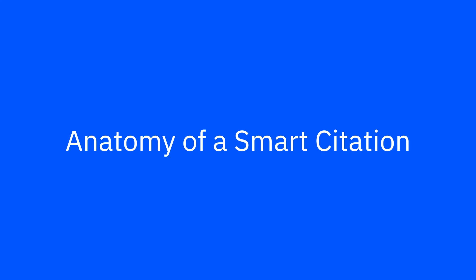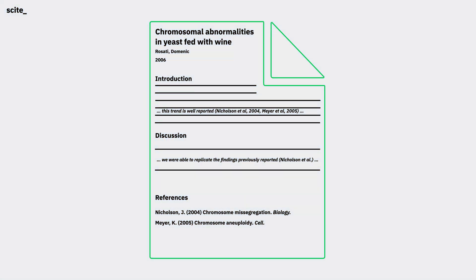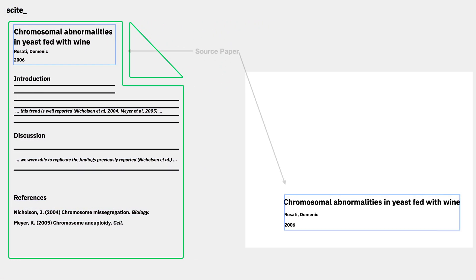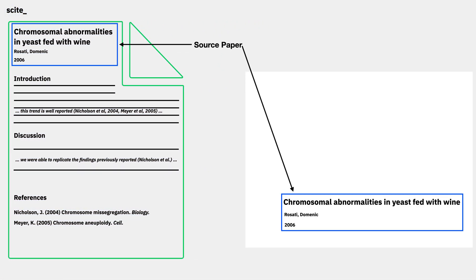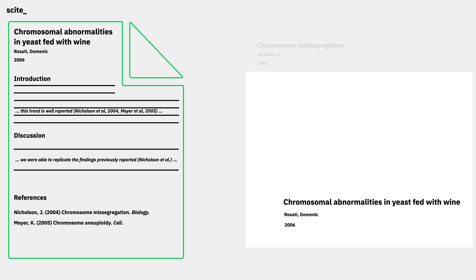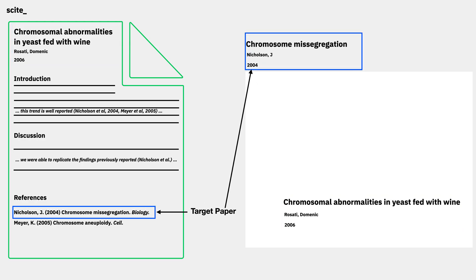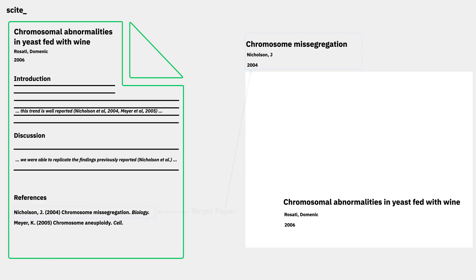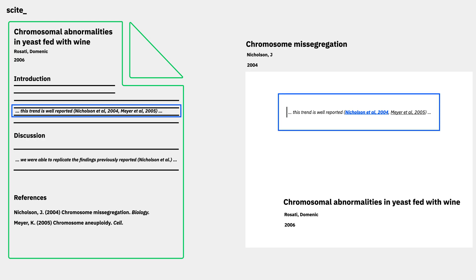A smart citation is unique to cite. It represents a combination of things: a paper that made a citation, sometimes called a source paper because this is where the citation is from; a paper that was cited, sometimes called a target paper because this is the target of the citation; and the citation statement — the sentences from the source paper where the citation to the target paper is actually used.